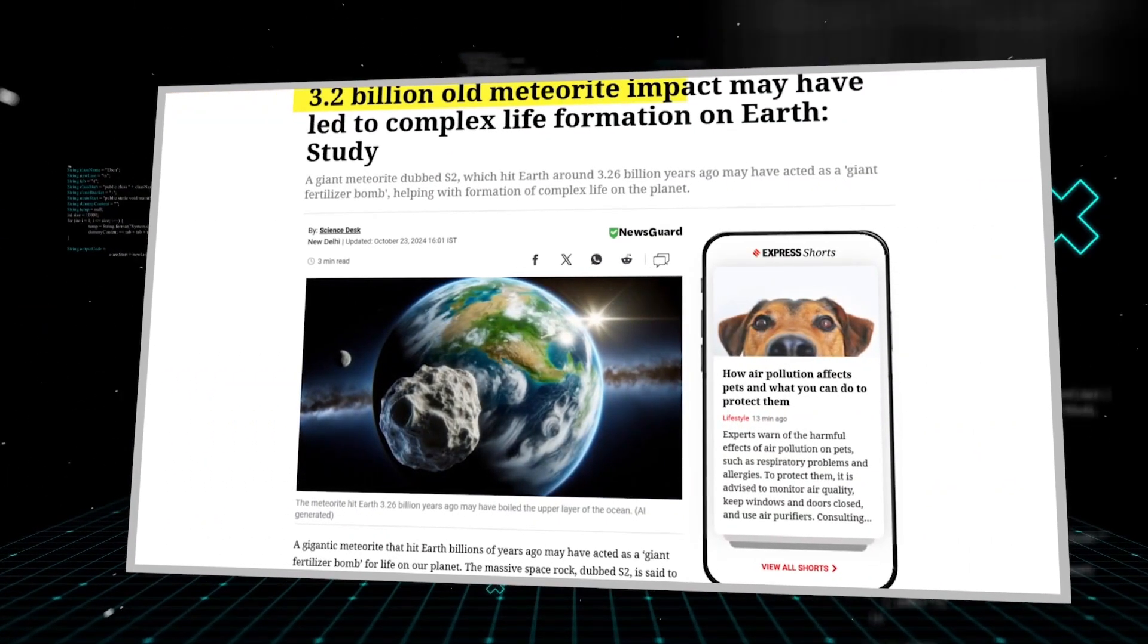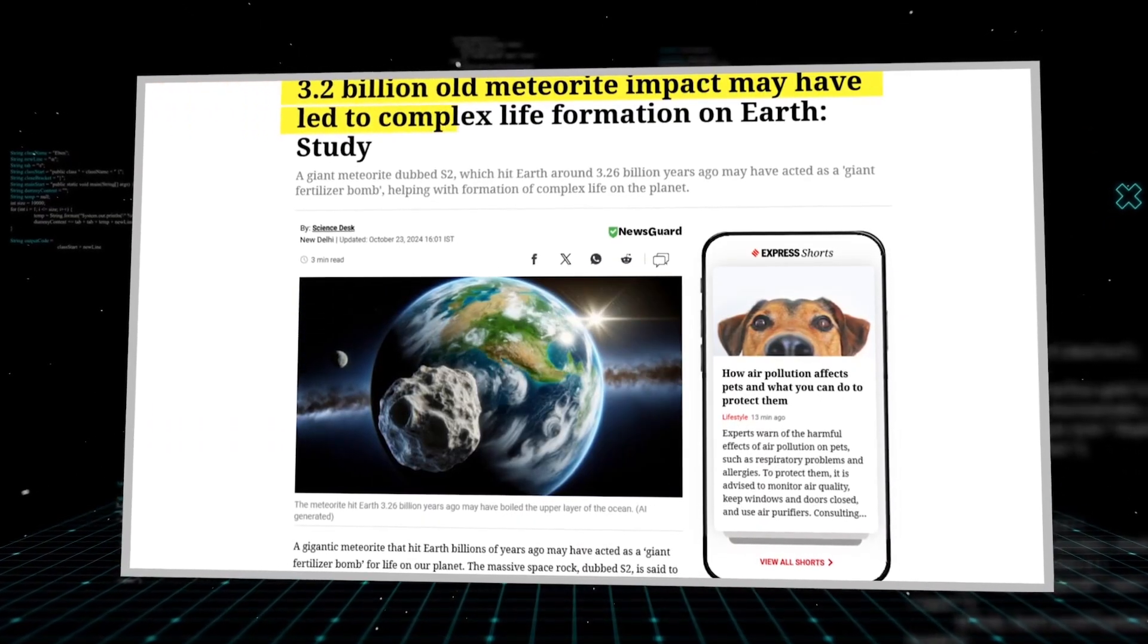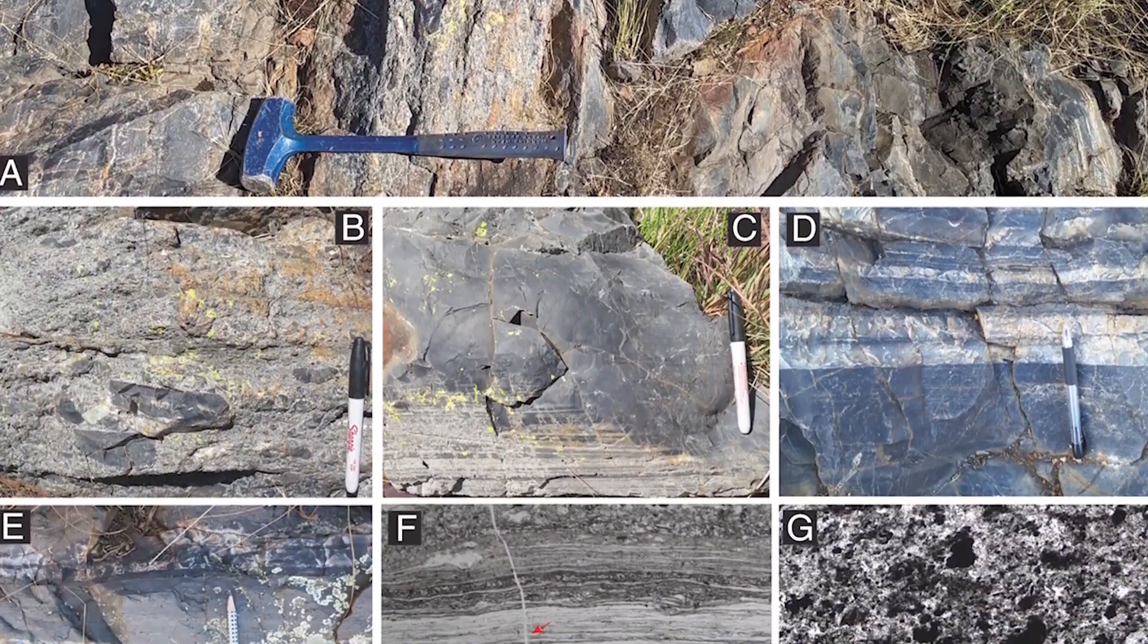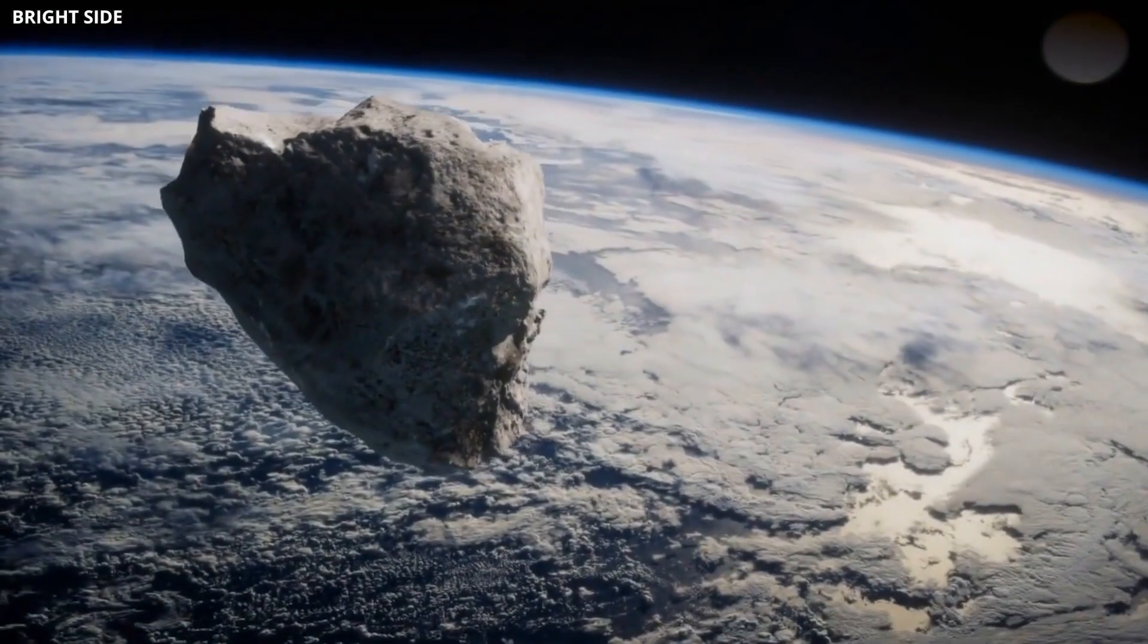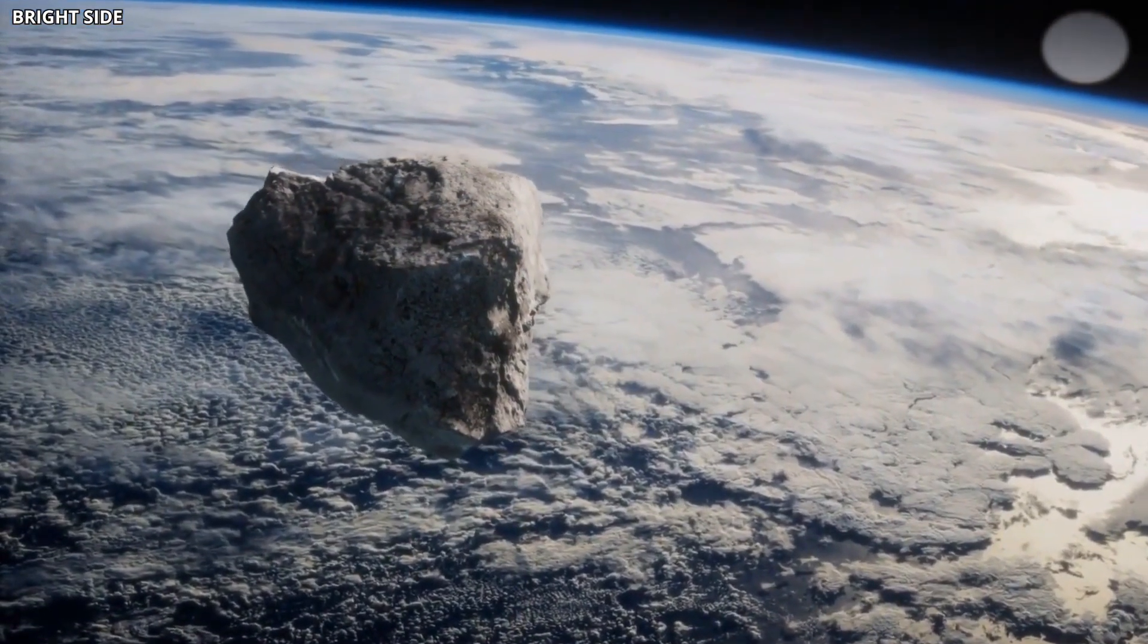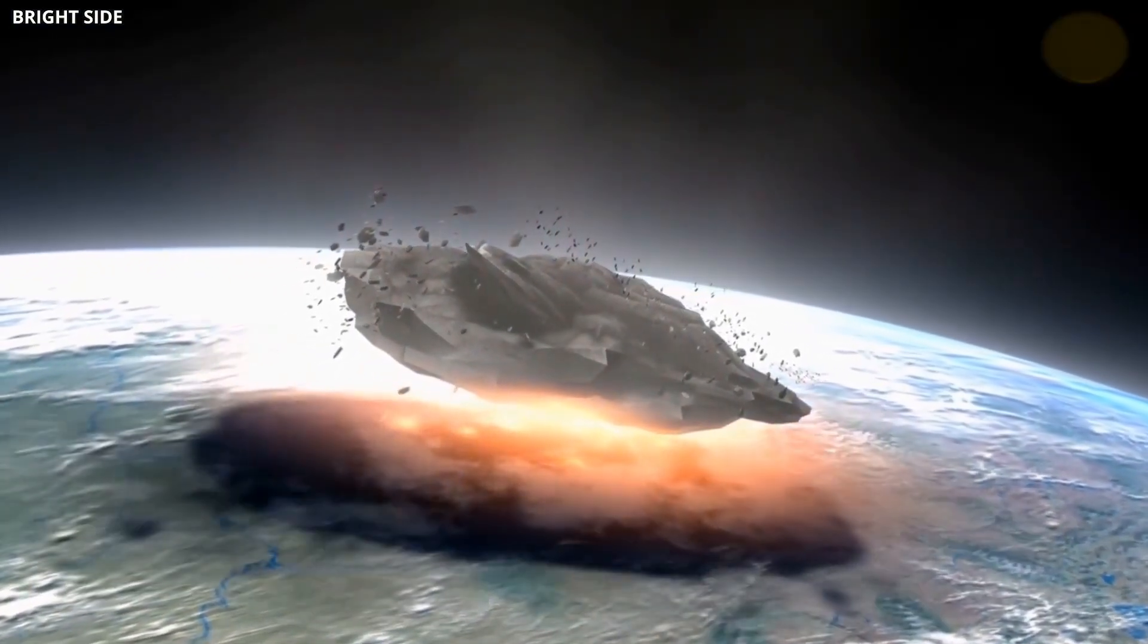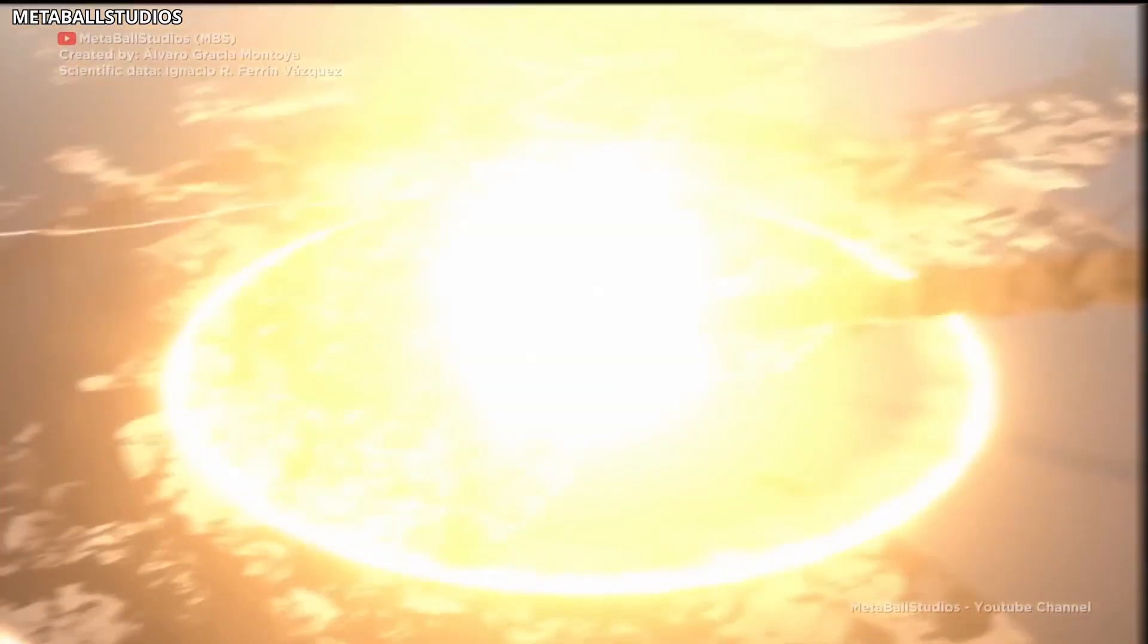In a recent study led by Harvard University geologist Nadja Draban, the S2 meteorite, which struck Earth over 3 billion years ago during the Paleoarchean era, may have played a crucial role in the planet's early life. This massive space rock, estimated to be 50 to 200 times larger than the Chicxulub asteroid, unleashed a cataclysmic event when it hit.